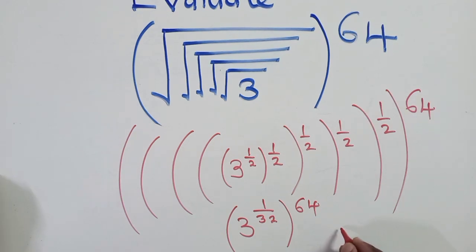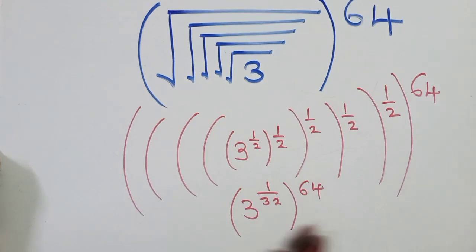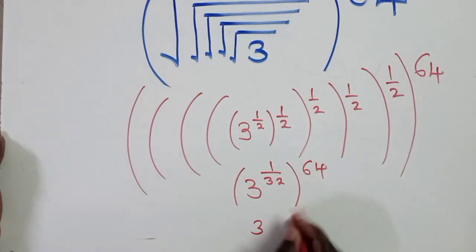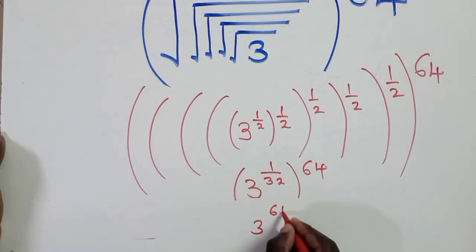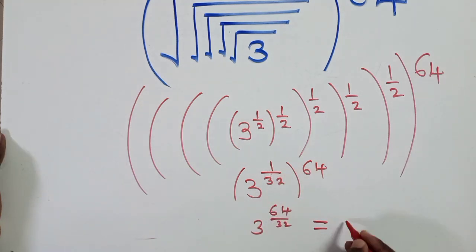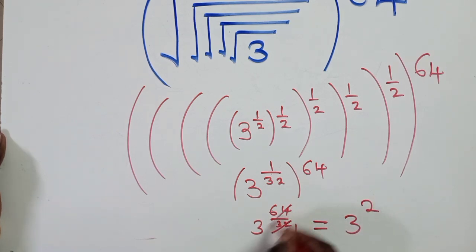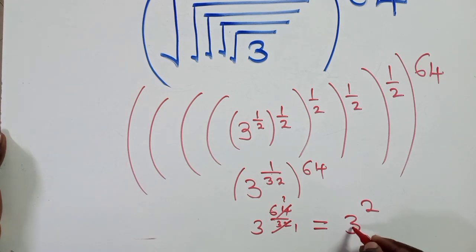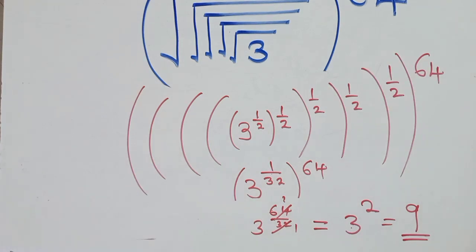When we work that out, it will be 3 to the power 64 over 32. Because we know that this power times this gives us this. Which simplifies to 3 to the power 2, since 64 divided by 32 is 2. So it will just be 3 power 2, which is equal to 9. So our answer here is just 9.